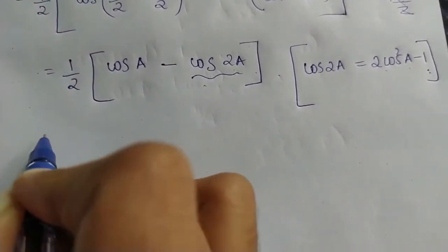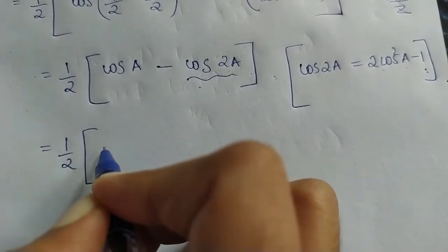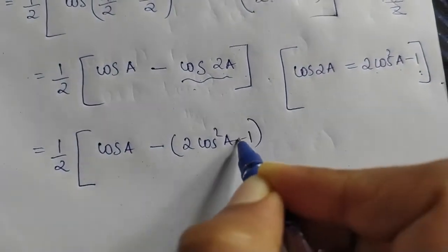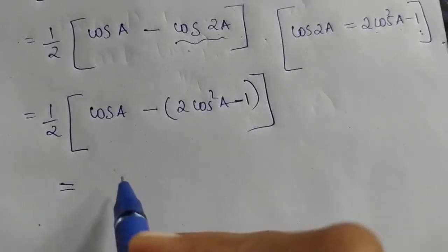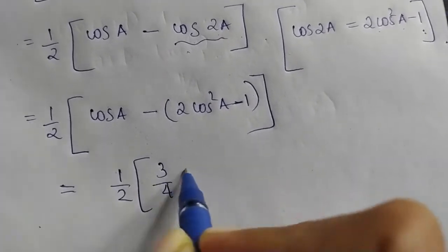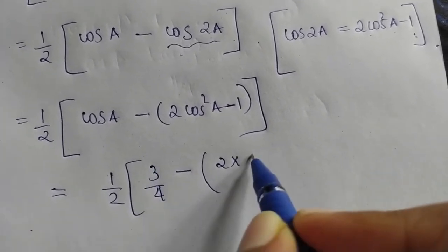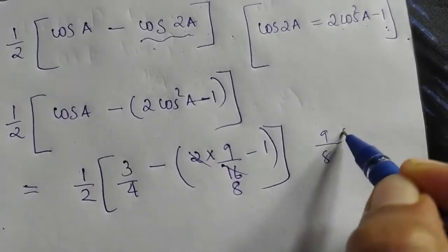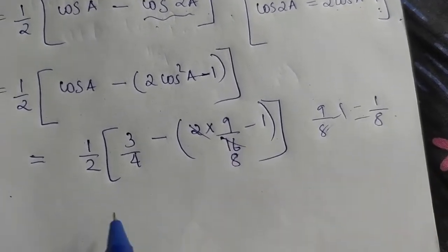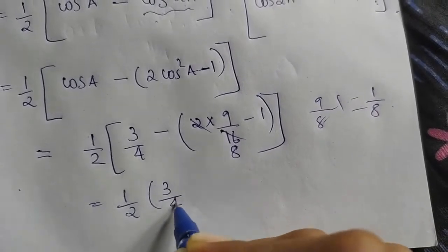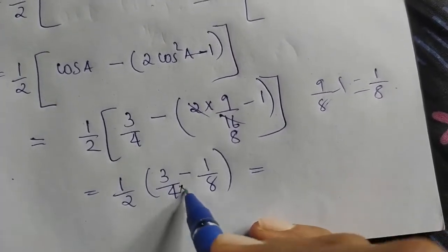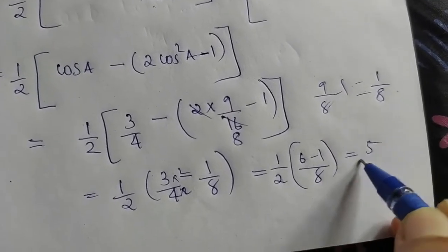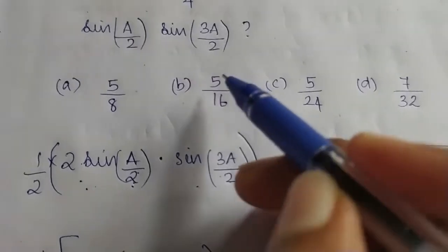We substitute the cos 2a value: cos 2a equals 3/4. Then half into (3/4 minus 2): that gives (9/16 minus 1), which is 9/8 minus 1, so 9 minus 8 equals 1/8. Now: 1/2 into (3/4 minus 1/8) equals 1/2 into (6 minus 1)/8 equals 5/16. So 5/16 is the answer — wait, that confirms Option D is the right answer.